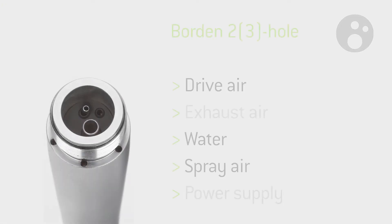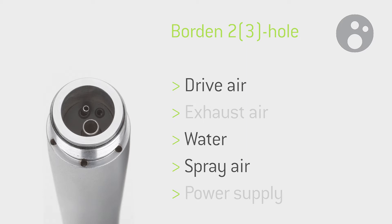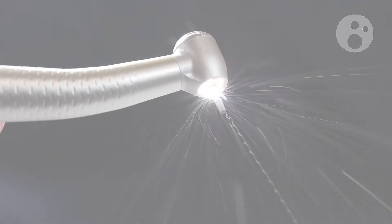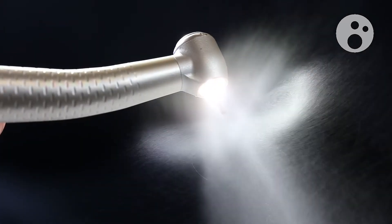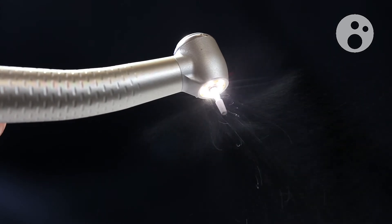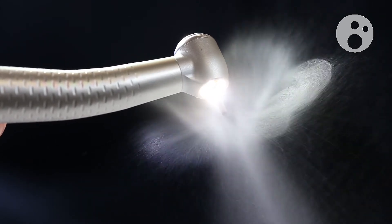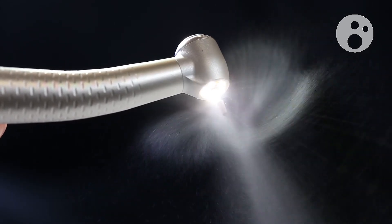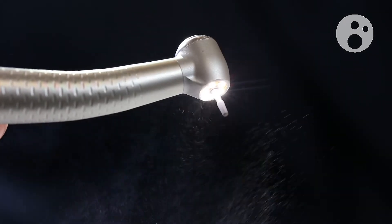The Borden two-three-hole connection has an additional air supply which directs the coolant to the treatment site. For this, the required air does not need to be separated from the drive air. The advantage is no loss in performance, and both air supplies can be adjusted separately.